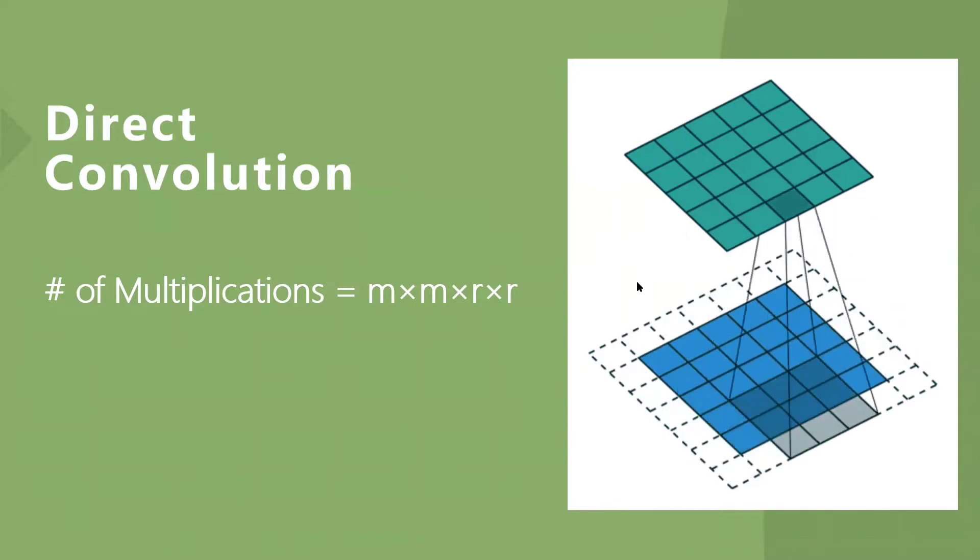This operation method is consistent with the definition of convolution. For the input matrix of M by M and the convolution kernel of R by R, the number of multiplications required is M times M times R times R.